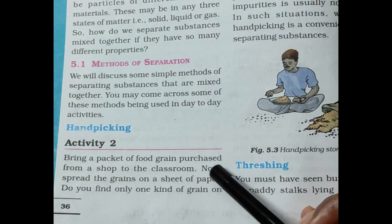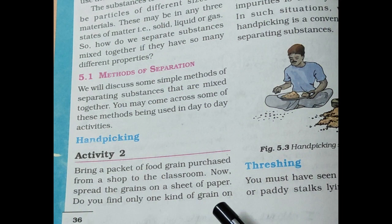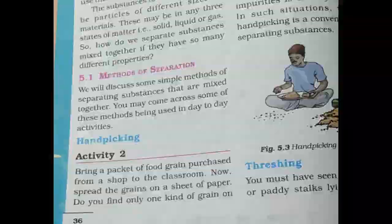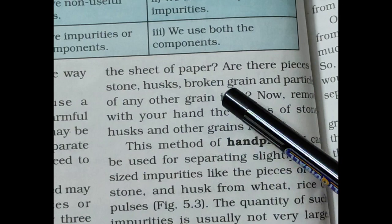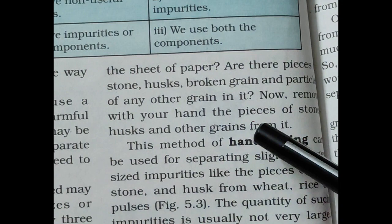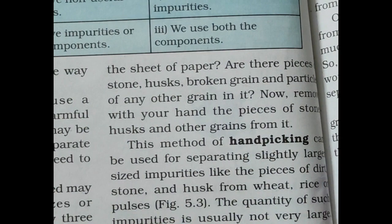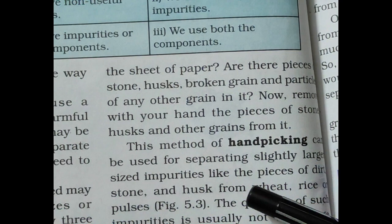Spread food grains on a sheet of paper. You may find not only grains but also pieces of stones, husks, broken grains, and particles of other grains. Now remove with your hands the pieces of stone, husks, and other grains from the sheet.